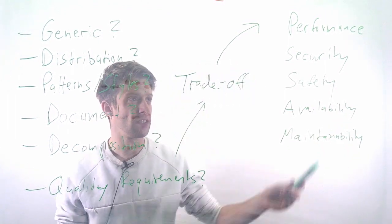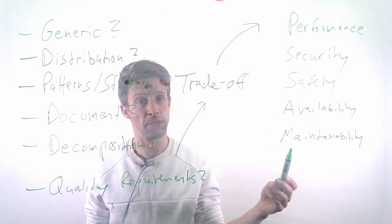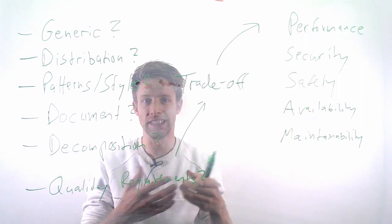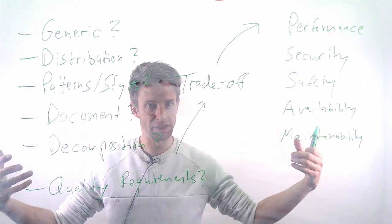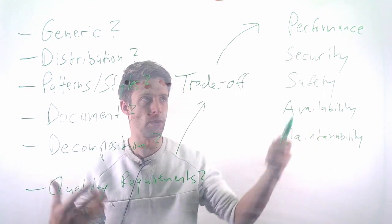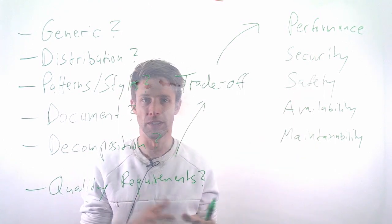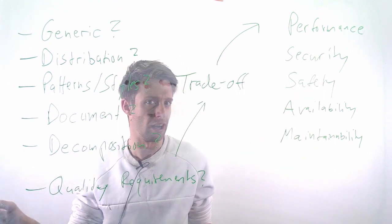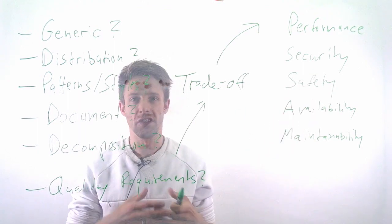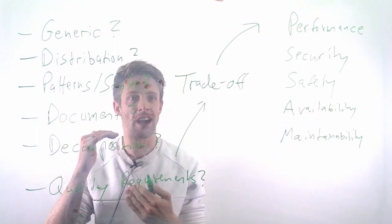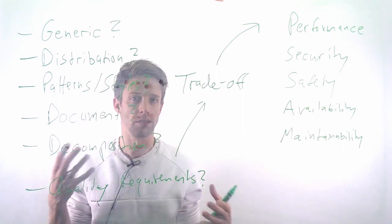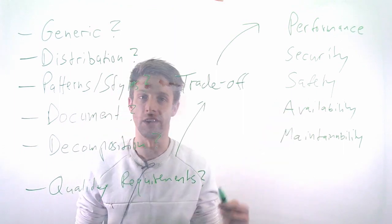So, depending on how you structure your system, it's more or less performant. For example, it supports easy replication of components. You just, instead of one, you have two and suddenly the performance goes up. Because one component only needs to handle half the traffic. Security, if you have a certain architecture, it's easier to add or replace certain parts that, for example, handle authentication.